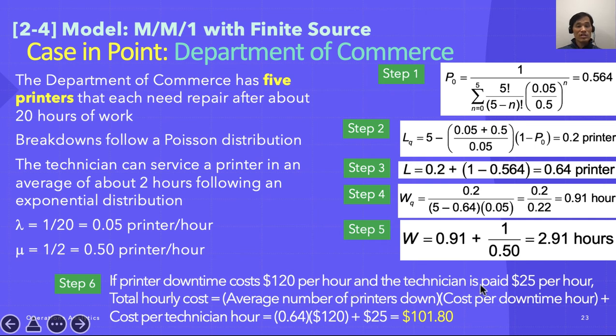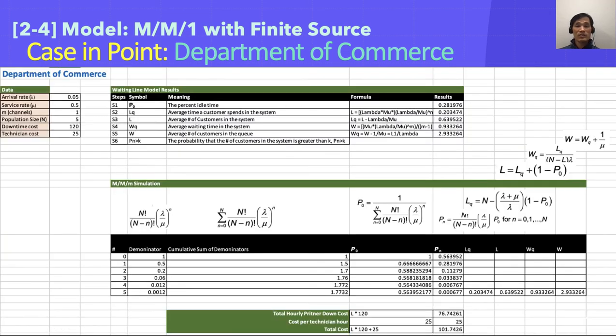Step six is if printer downtime costs $120 per hour, and the technician is paid $25 per hour, the total hourly cost is given from the question. The total hourly cost in this case is going to be average number of printers down times cost per downtime hour, plus the service time and the waiting time, plus cost per technician hour, that's the service time. If you add them together, it's about $101.80. So that's how you calculate this case. And let's now take a look at Excel so that we can solve this one together.